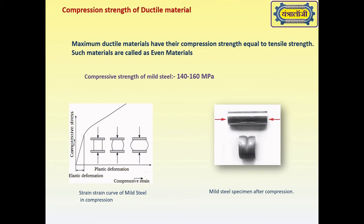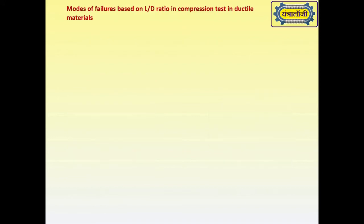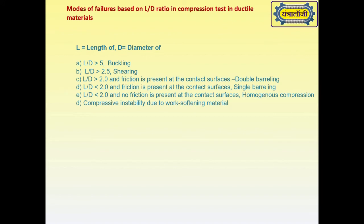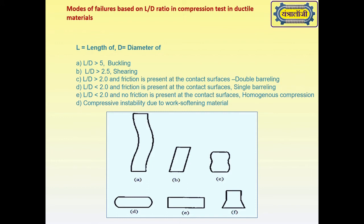In ductile materials, the modes of failures in compression test are dependent on L/D ratio, where L is length of the specimen and D is diameter. If L/D is greater than 5, there will be buckling. If L/D is greater than 2.5, there will be shear failure.